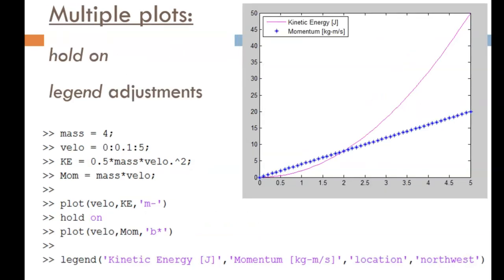This slide shows an alternative way to place multiple curves on one figure. It also shows a way to adjust the legend location. Here, I create the same data as before, then I plot the first curve alone, which happens to be KE versus velo as a solid magenta line.